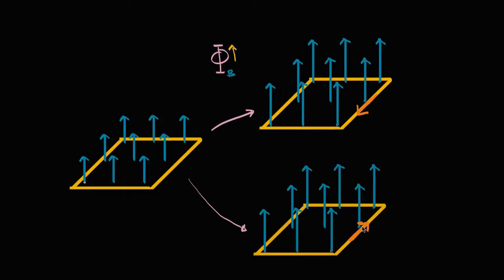Let's think about it. We know that a current flowing through a wire will induce a magnetic field above and beyond the one that's already there. Let's think about the type of magnetic field that this orange current would induce. If it's going in the counterclockwise direction, we use the right-hand rule: take your right hand, point your thumb in the direction of the current, and your fingers loop in the direction of the magnetic field.